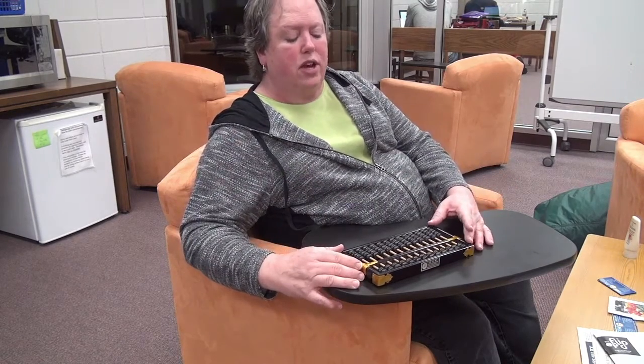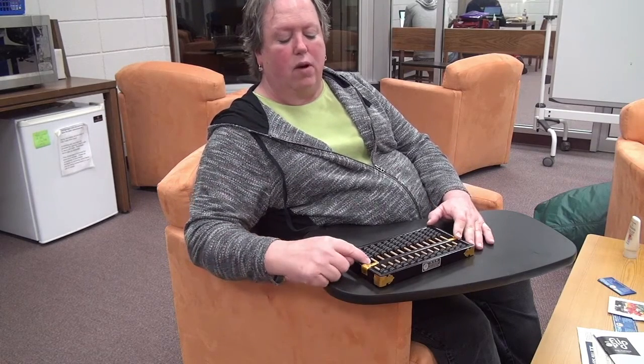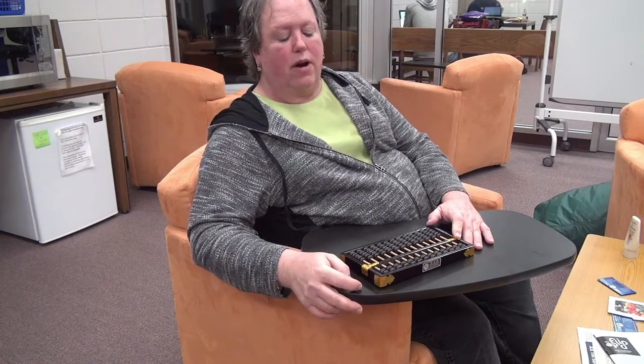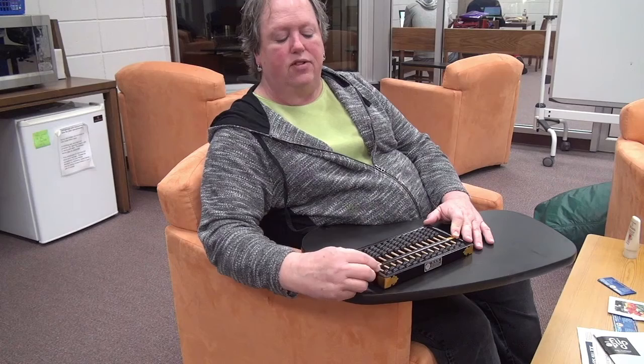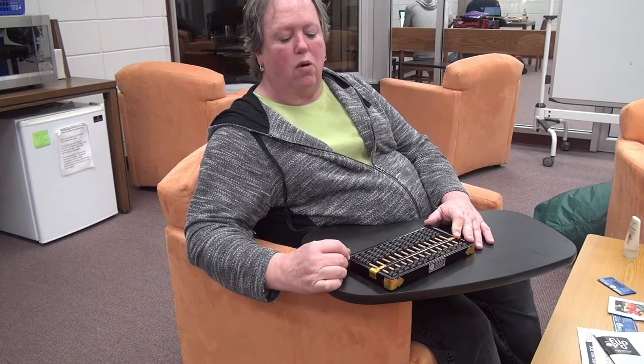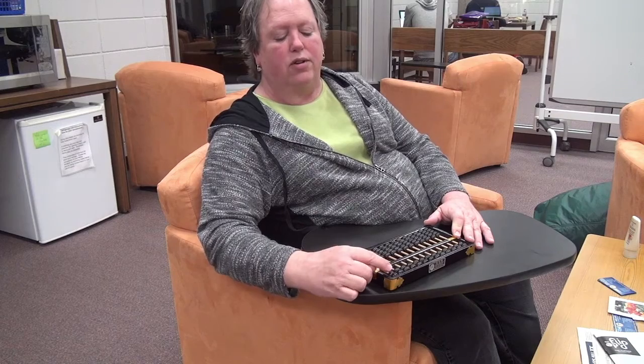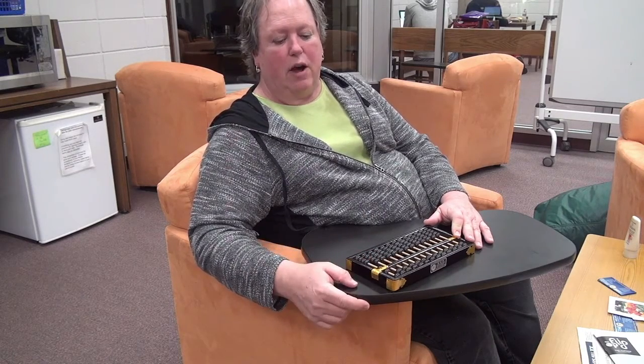The basic use of an abacus. So we have our ones, tens, hundreds. So if I want to count, these beads up on the top are worth five, these down below are worth one. So if I wanted to take five, six, that would be six.